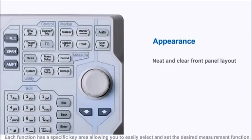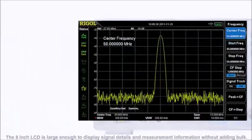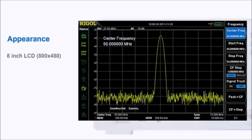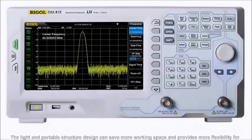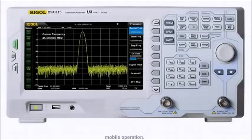Each function has a specific key area, allowing you to easily select and set the desired measurement function. The 8-inch LCD is large enough to display signal details and measurement information without adding bulk. The light and portable design can save workspace and provides more flexibility for mobile operations.